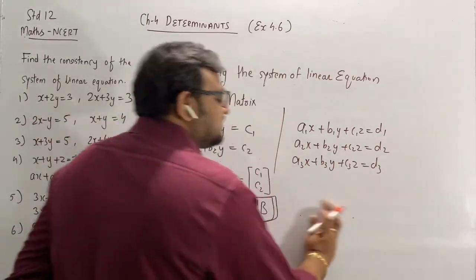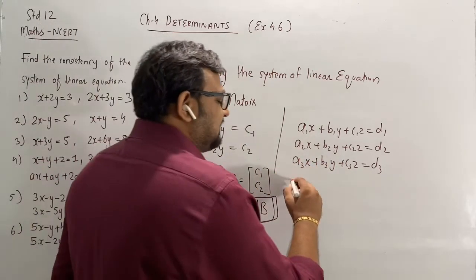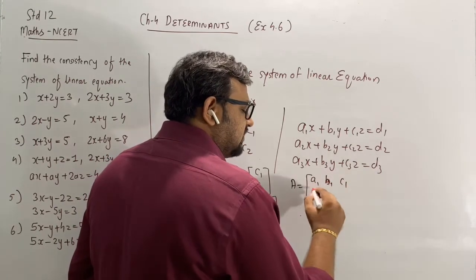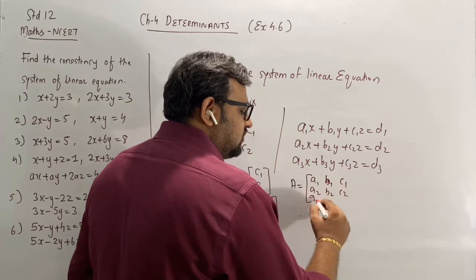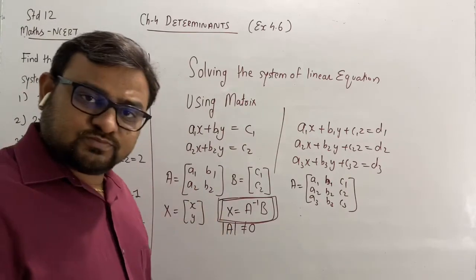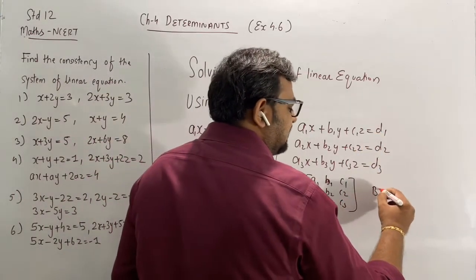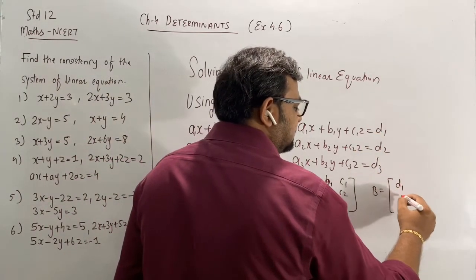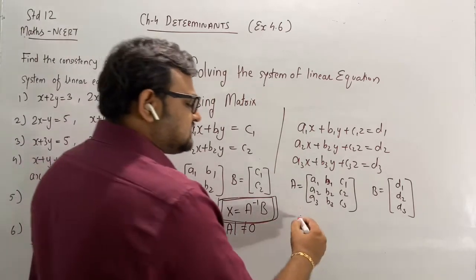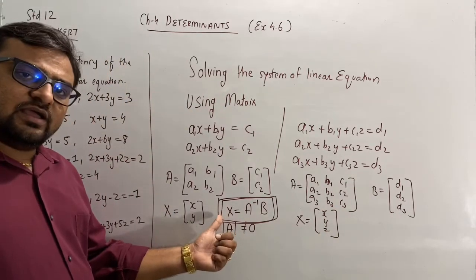Now, if it is a 3-variable linear equation, in that case the matrix A will be 3 cross 3: A1, B1, C1, A2, B2, C2, A3, B3, C3. So the order is 3 cross 3. Here it was 2 cross 2. And here the matrix B will be 3 cross 1, means 3 rows and 1 column. And the matrix X will be equal to x, y and z. So again, use the same formula.